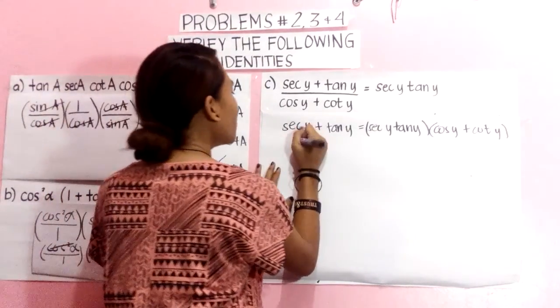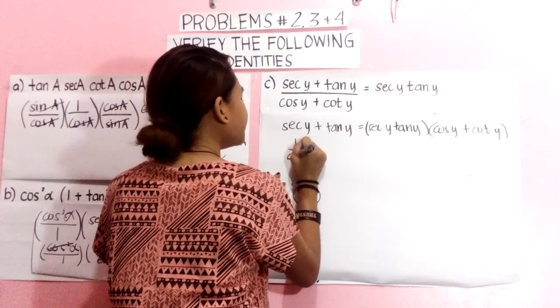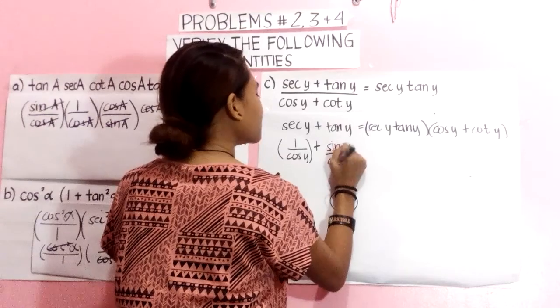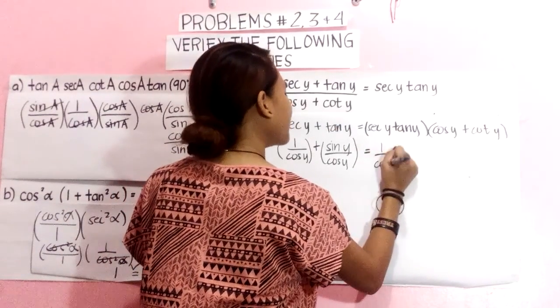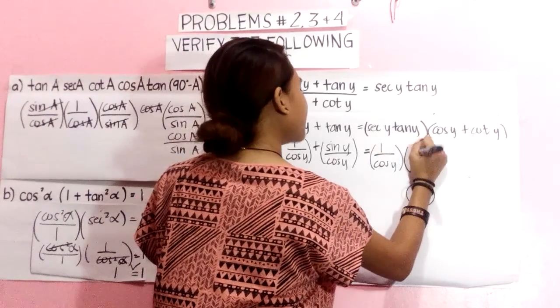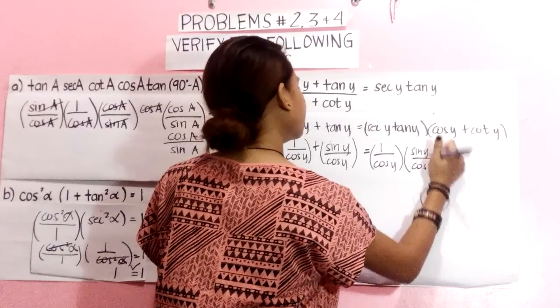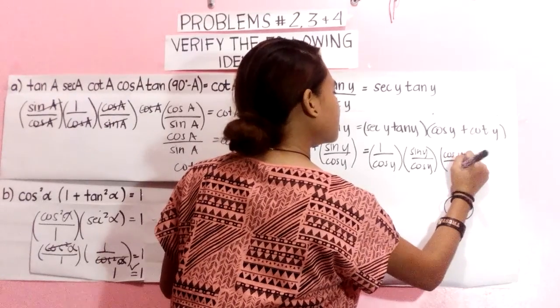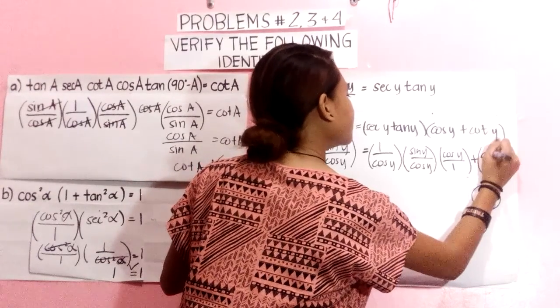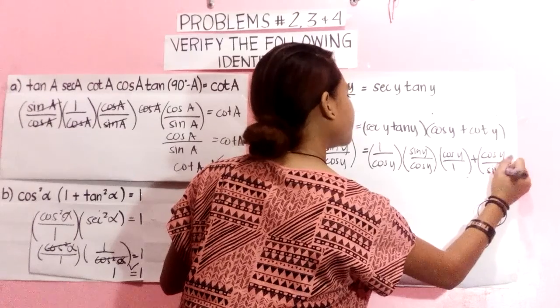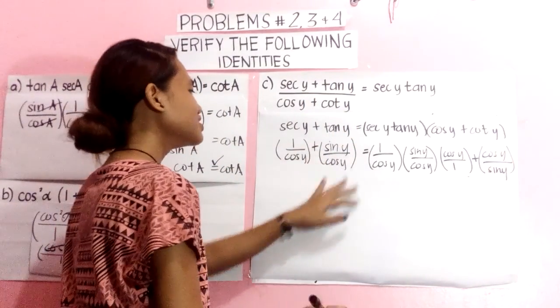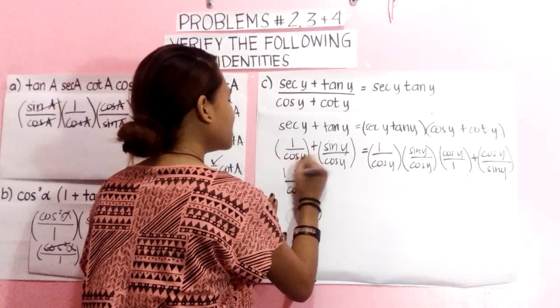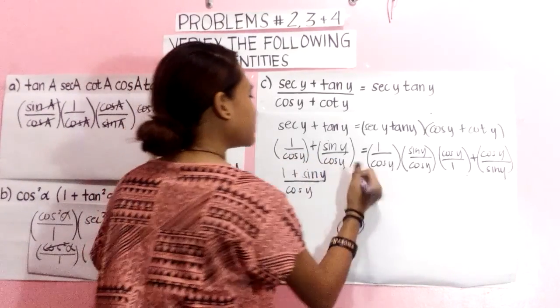Sec Y is equal to 1 over cos Y plus sin Y over cos Y equals 1 over cos Y. We will make this S1. That is why we have cos Y, 1 plus sin Y is equal to multiply this 1.